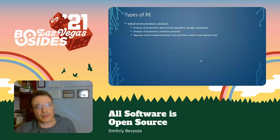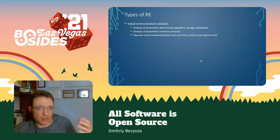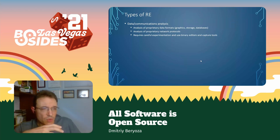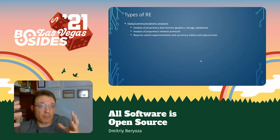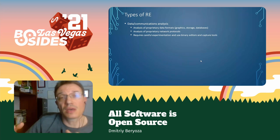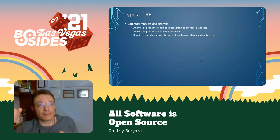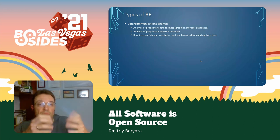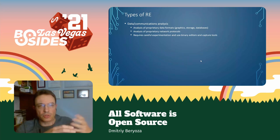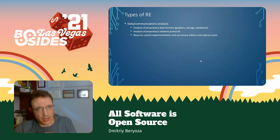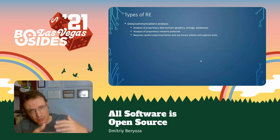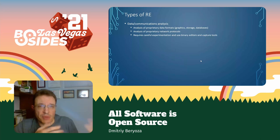There are several types of reverse engineering. You can start with data and communications analysis — that's useful when something you're looking at is truly a black box and you don't have access to the underlying executable. You can still do some reverse engineering by monitoring data formats being produced, interacting with the product, dumping files that are being produced, and teasing out knowledge about those formats and exactly how data is stored.